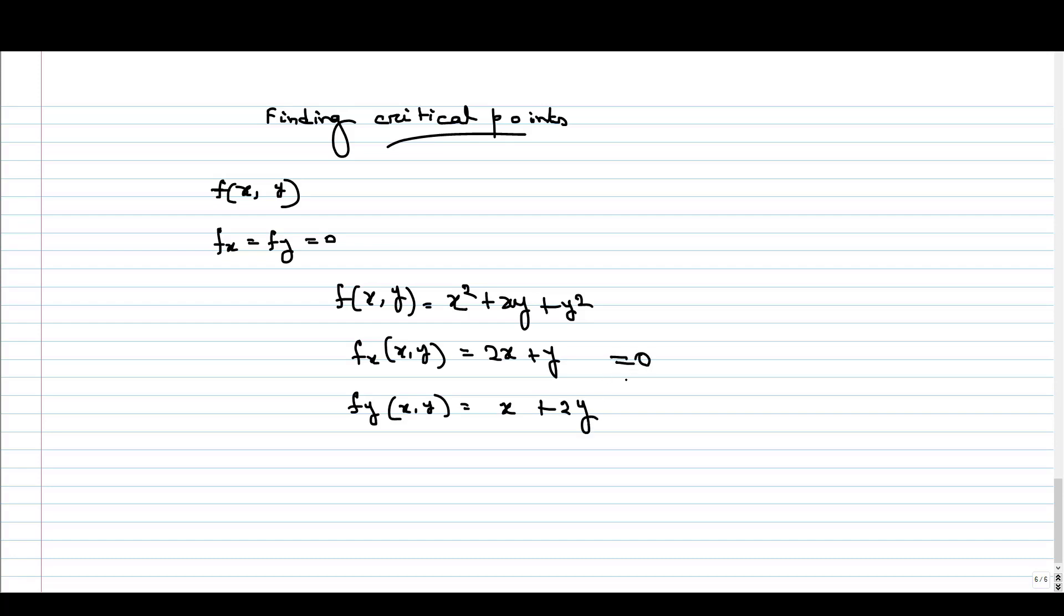If I equate both of them to zero and if I solve this, I will get there is only a unique point that is x equal to zero and y equal to zero. That is at the origin. This origin is a critical point.